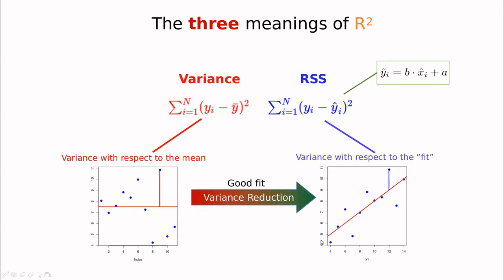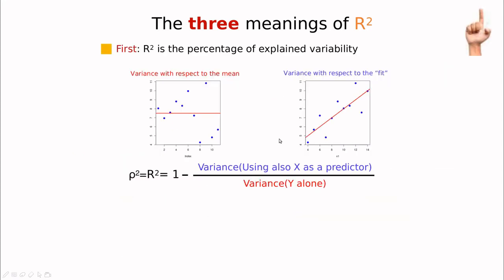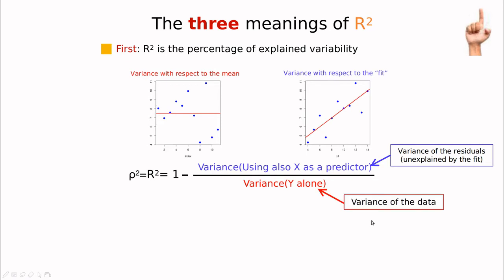A good fit is something that, whenever you draw this line, you are reducing the overall length of these sticks. So what is R-squared? R-squared is one minus the ratio between those two things. The variable in the numerator is the variance of the residuals unexplained by the fit — so when we take x as a predictor, how much improvement is in our variance. The denominator is the variance of the data. If you have a very perfect fit in which all the points go into a straight line, there is no variance left, because we can predict everything with x. So this would be zero and R-squared would simply be one.